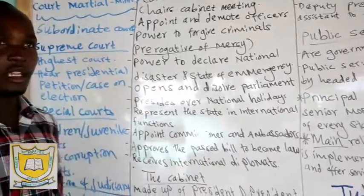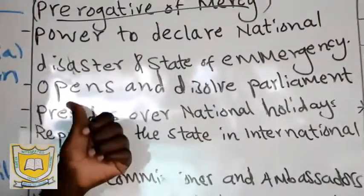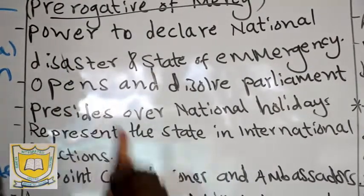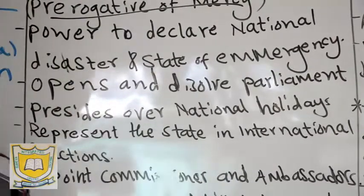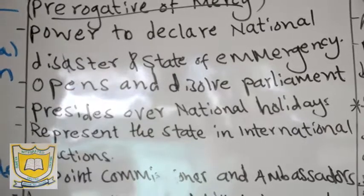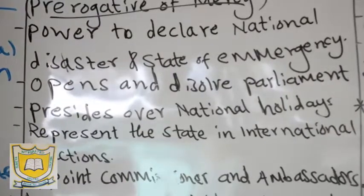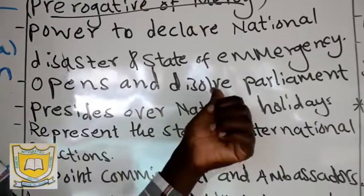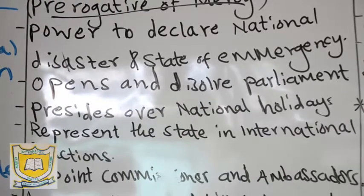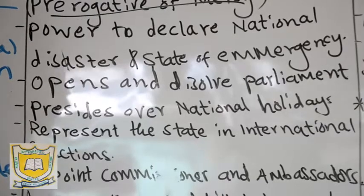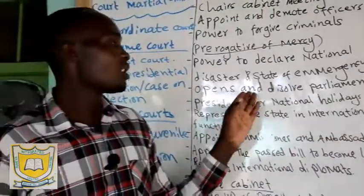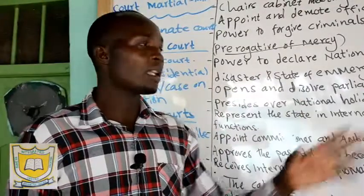The president can only declare a national disaster. Then he opens and dissolves the parliament. During the beginning of a new government the president has the power to open the parliament. Then at the end of the term — that's five years — the president will also close or dissolve the parliament. The president is the one that opens and dissolves the parliament according to the constitution.